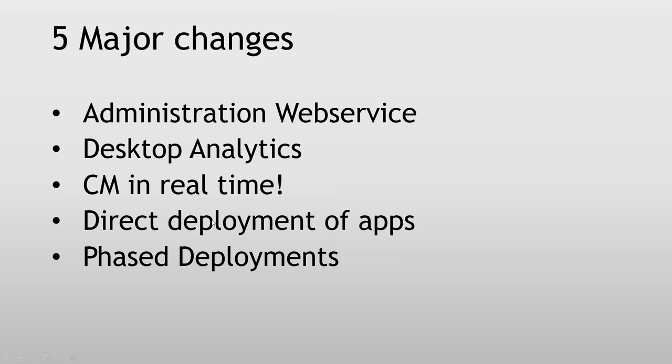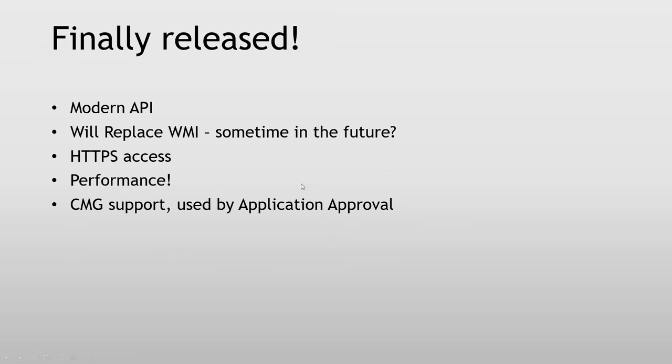Let's start with Administration Web Service. This has been around for a long time — it had different names before and it was a pre-release feature. It was introduced in 1810 as a pre-release. Now it's finally released and it's part of the product — we can't enable or disable it. Basically it's a modern API, and hopefully it will replace WMI sometime in the future. We are seeing some parts of the console working against it now, which you can enable. I will show that soon.